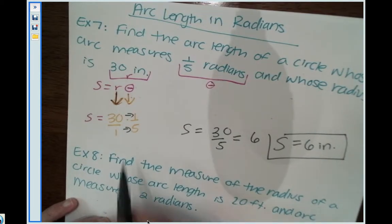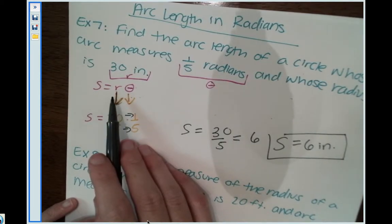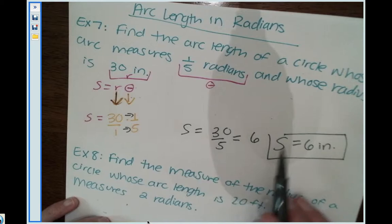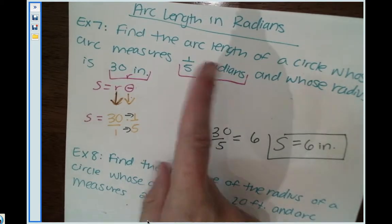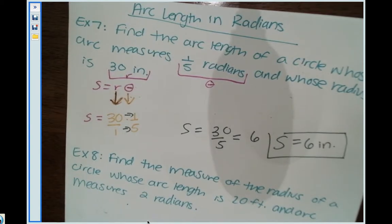Remember, since we only have one dimension, the radius is our only dimension we're working with, so we're not going to square. It's to the first power since we only have one dimension, so our arc length is 6 inches.